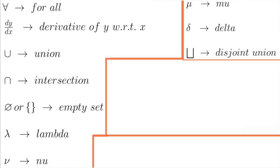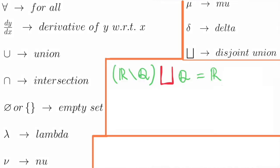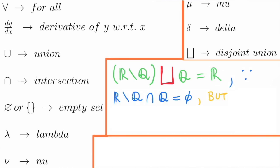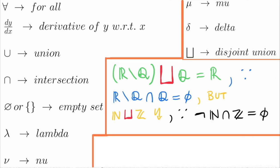The disjoint union is written as this squared U. An example is the disjoint union of the irrationals with the rationals, which results in all real numbers, since the intersection between irrationals and rationals is empty. But the natural numbers disjointly united with the integers is a contradiction, because it is false the fact that the intersection between the natural numbers and the integers is empty. In other words, there exist numbers that are simultaneously part of the naturals and of the integers, and thus I cannot perform their disjoint union.